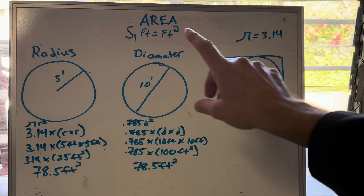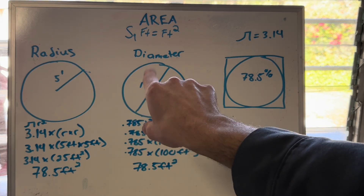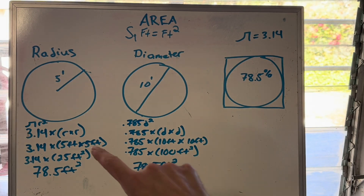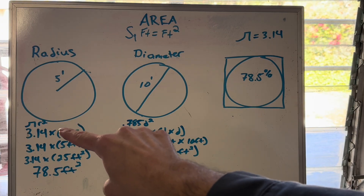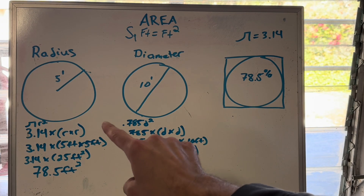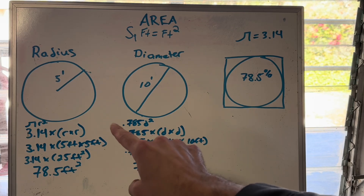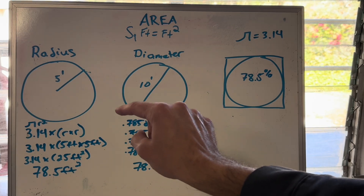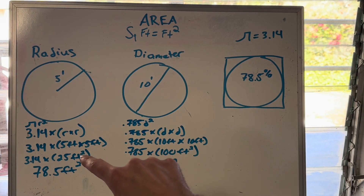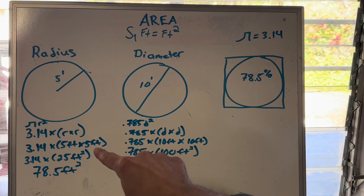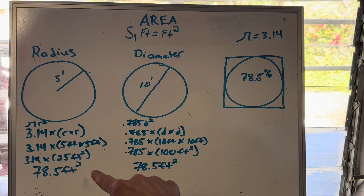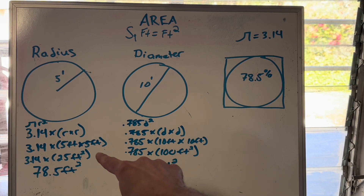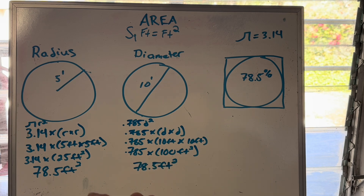So 3.14 is pi. Let's solve for the square feet on a circle using the radius. The equation is pi r squared, which means 3.14 times radius times radius. Squared means that value multiplied by itself two times. So what that looks like is 3.14 times five feet times five feet, which gives us 3.14 times 25 square feet — because we multiply the units too, not just the number. Foot times foot is square foot, giving us a final answer of 78.5 square feet.